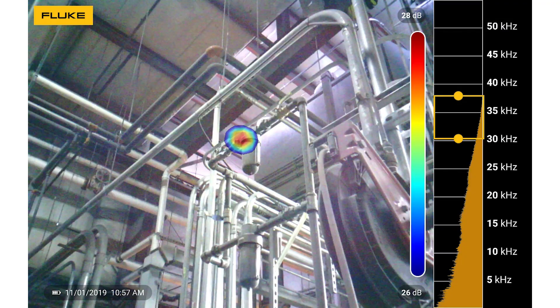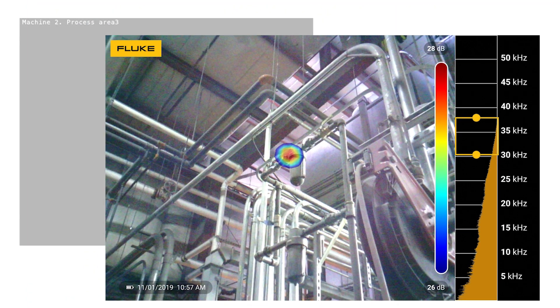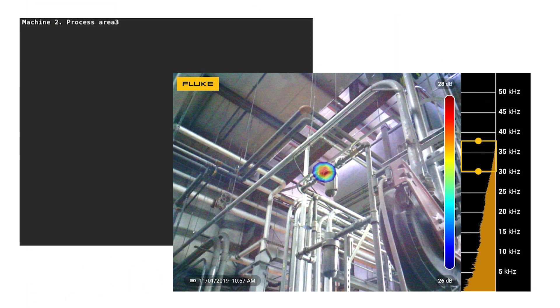Images are stored on the device as JPEGs or PNG files. They can be downloaded to a computer where work orders can easily be drawn up. Notes can be added to the files so that it's easy to understand the location of the leaks.